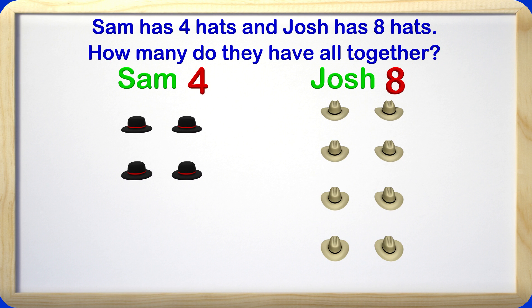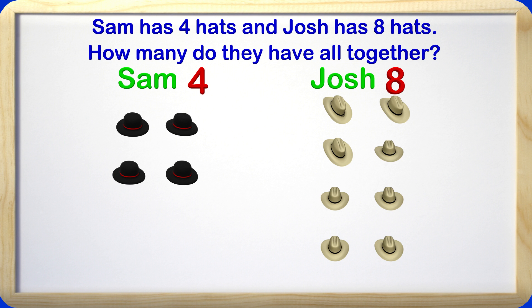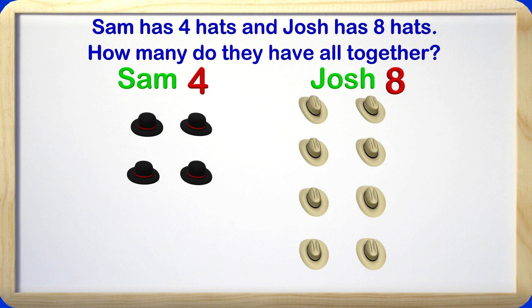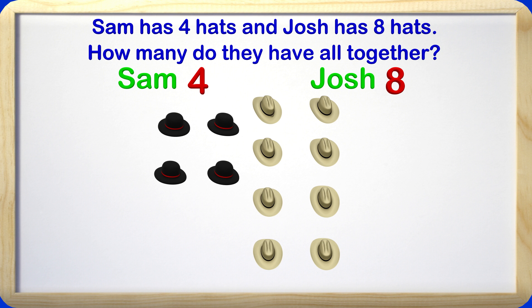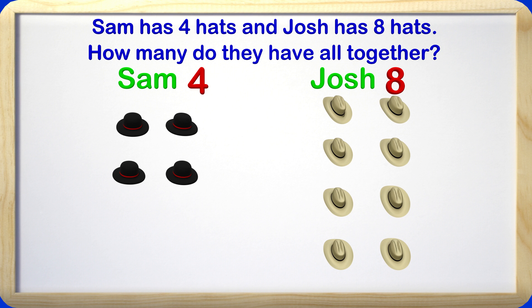Sam has 4 hats: 1, 2, 3, 4. Josh has 8 hats: 1, 2, 3, 4, 5, 6, 7, 8. The question is asking how many we have all together. All together means putting the groups of items together — we also call this adding. We are adding Sam's 4 hats with Josh's 8 hats to find out how many we have all together.